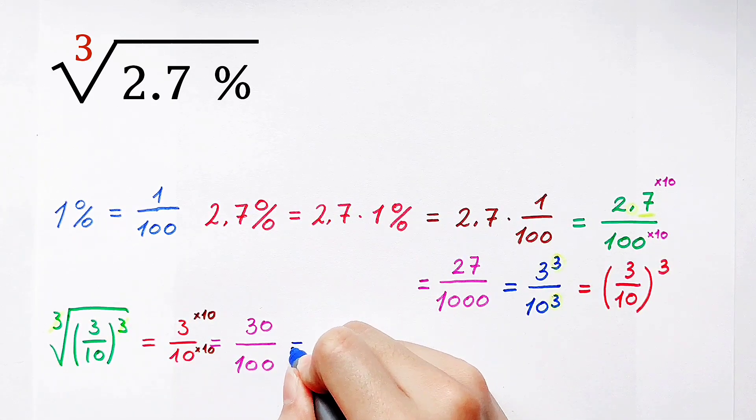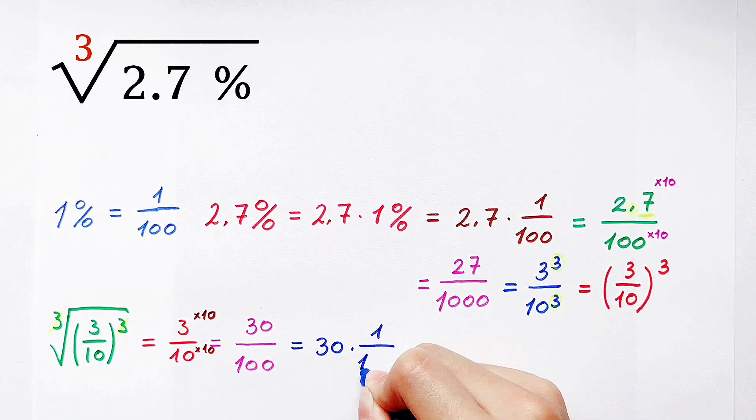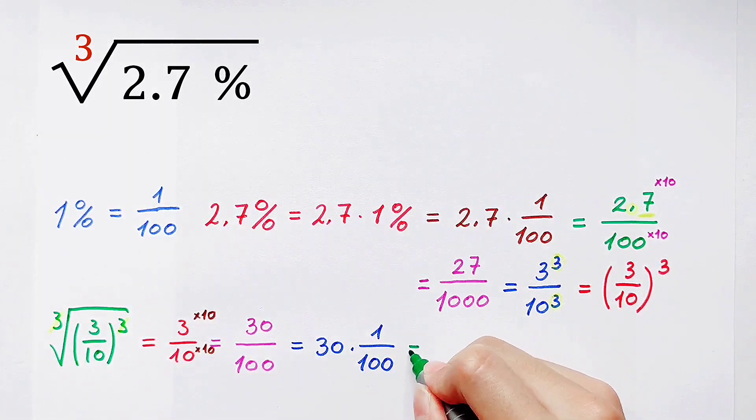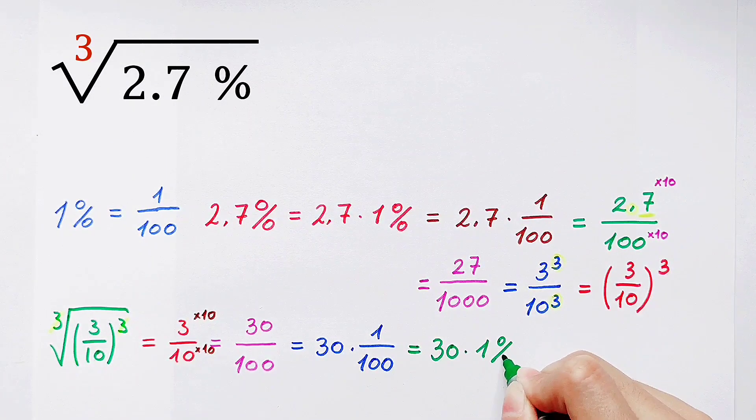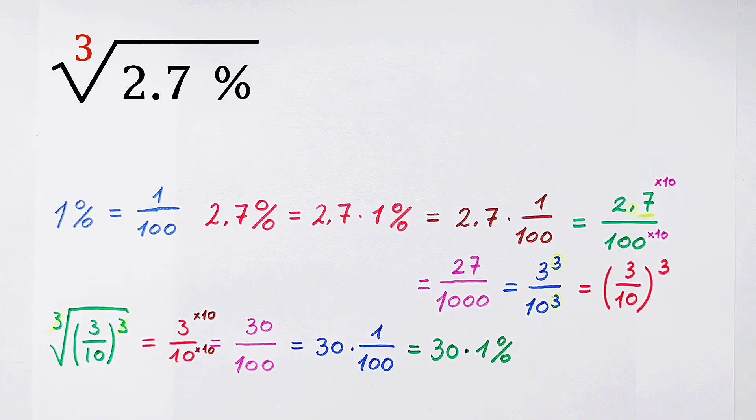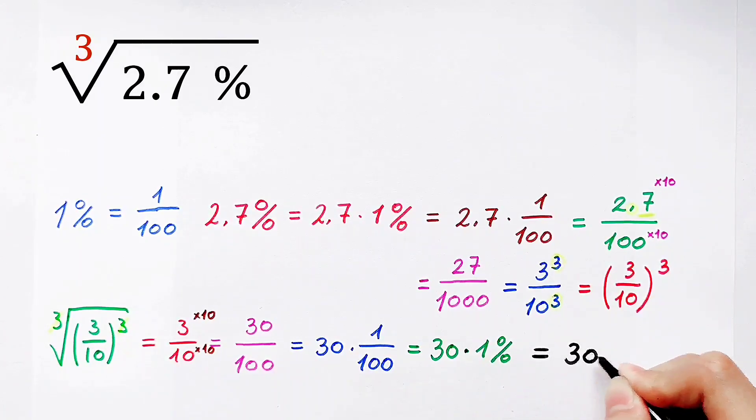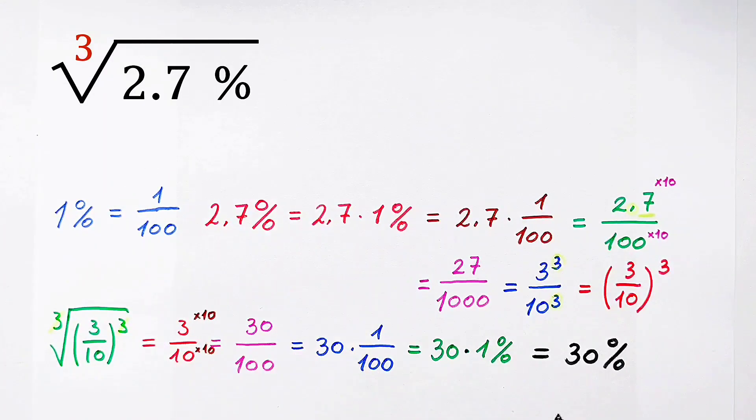That is 30 times 1 over 100. 1 over 100 is 1 percent. So it's 30 times 1 percent, which is 30 percent. So the value of our cube root of 2.7 percent is 30 percent.